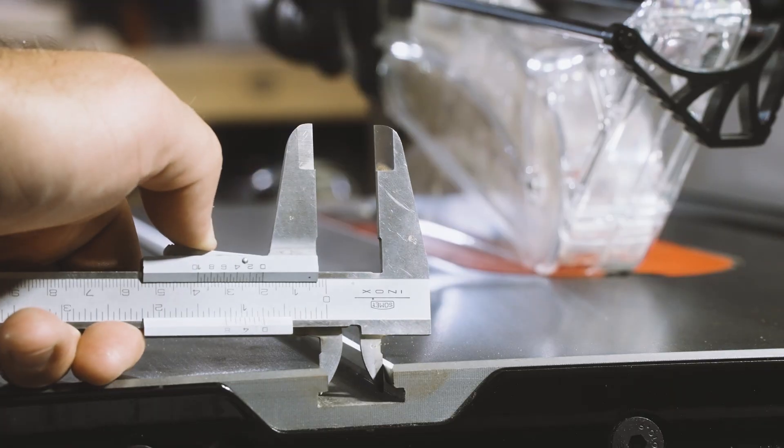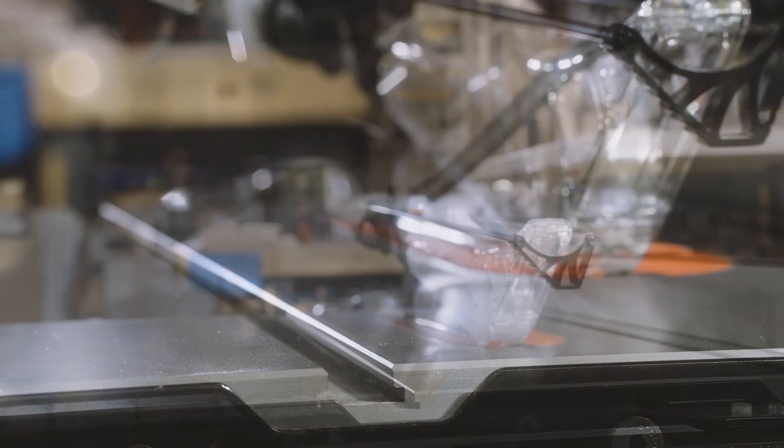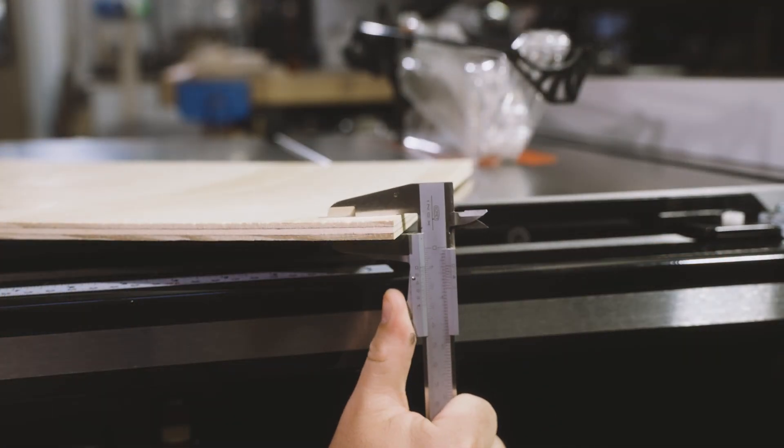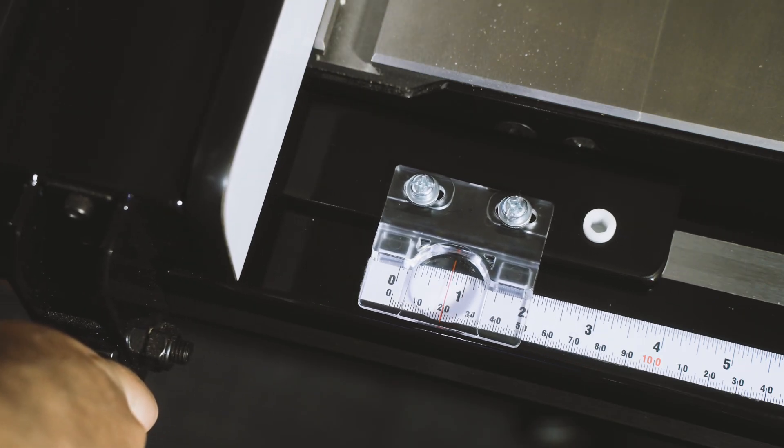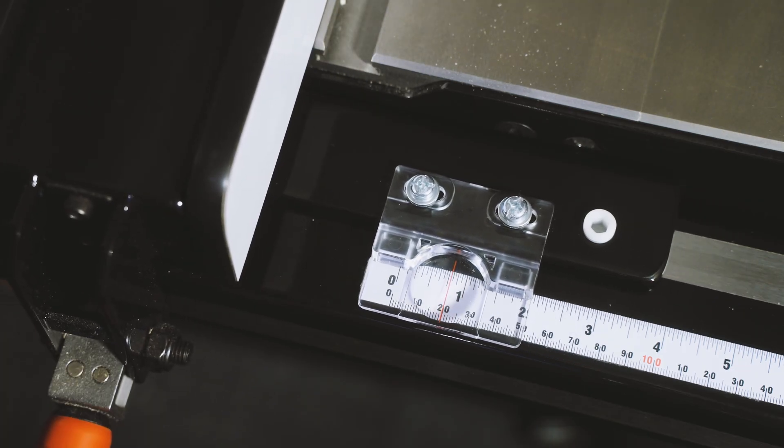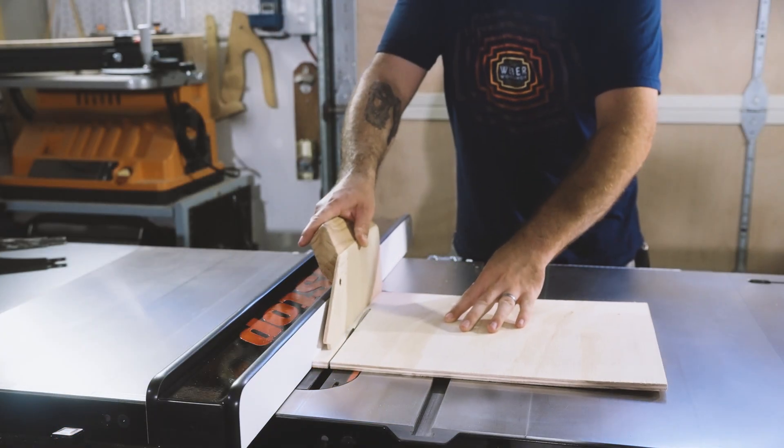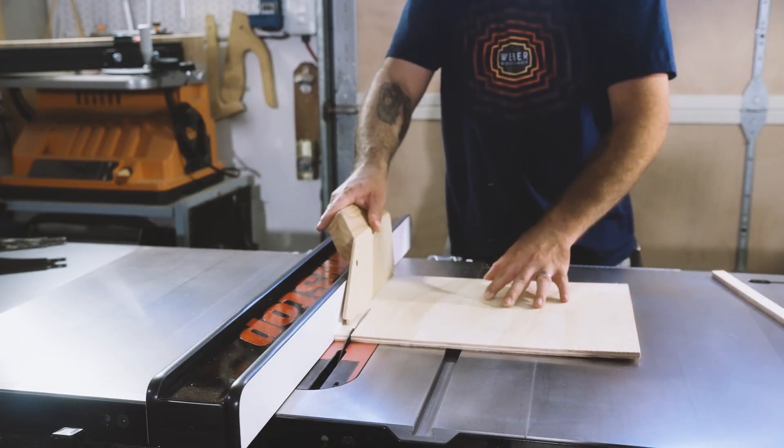The miter slots in the table saw are about 3 quarters of an inch wide and approximately 7 sixteenths of an inch deep. So I'm going to use this 3/8 inch plywood to make runners for the bottom of the jig. I'm setting the fence to just over 3 quarters of an inch because I want to cut them a little bit tight first, and then adjust as needed until they're a perfect fit.